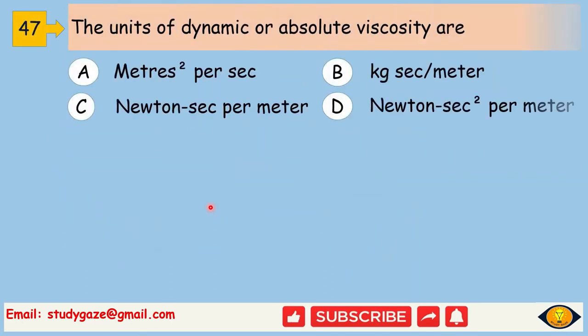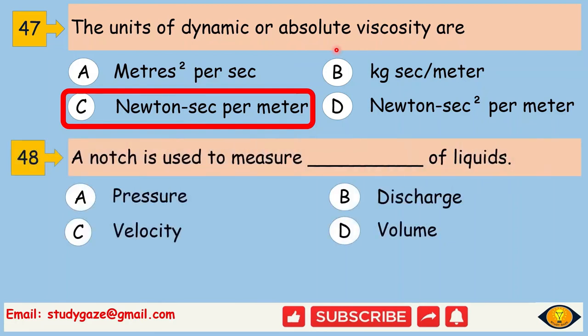The unit of surface tension is Newton per meter. The units of dynamic or absolute viscosity are Newton second per meter square. A notch is used to measure discharge of liquids.